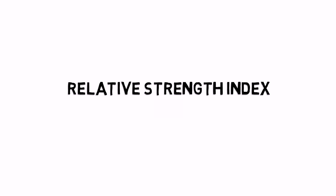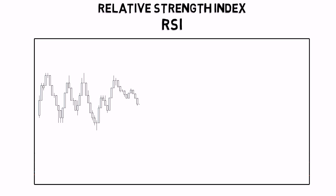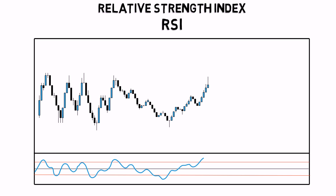The Relative Strength Index, or RSI, is a momentum indicator which measures overbought and oversold conditions in the market. The indicator oscillates between 0 and 100, with values below 30 traditionally showing oversold and above 70 overbought conditions in the market.